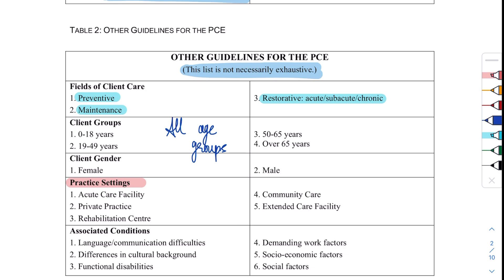What we are going to be tested on is how you are going to provide care to your client — client care is the most important component. You are not only going to treat the condition; you're also going to tell them preventive measures and how to maintain the condition. Your treatment changes drastically if it's a chronic condition as opposed to an acute condition. You are also going to be treating clients of all age groups — you don't need to specialize in geriatrics, pediatrics, or pelvic health for this exam.